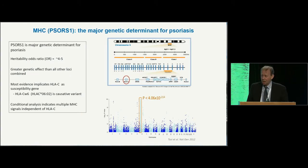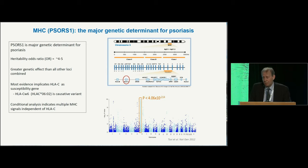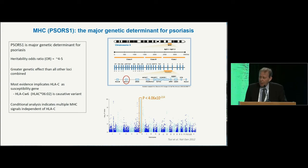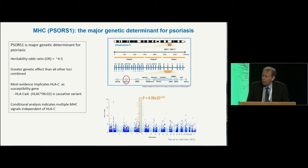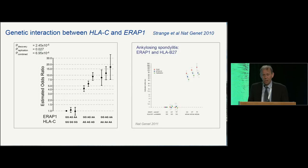When thinking about psoriasis genetics, as my colleague Francesca Capon says, never forget the elephant in the room, which is the MHC. The MHC is by far the major psoriasis susceptibility determinant — the heritability odds ratio is between 4 and 5, and the genetic effect of this locus is greater than all other loci combined. Within the locus there are multiple genes, and extensive linkage disequilibrium makes dissecting it extremely difficult. Most evidence implicates HLA-C itself as a susceptibility gene, with the causative variant being HLA-CW6. Conditional analysis indicates there are multiple signals independent of HLA-C as well.